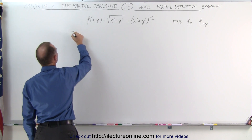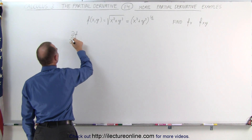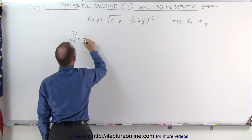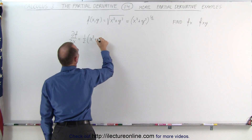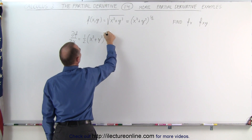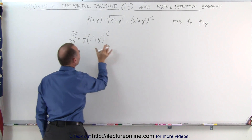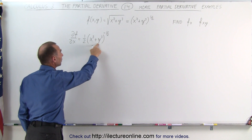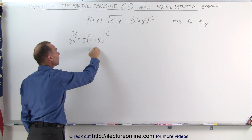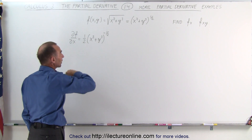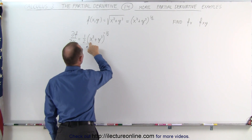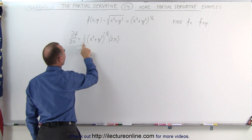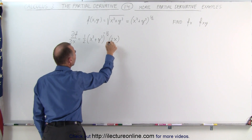First we're going to take the partial derivative of the function with respect to x. That's going to be equal to one-half times the quantity x squared plus y cubed to the minus one-half power, times the derivative of what's inside. Since it's the partial derivative with respect to x, y is considered a constant — so the derivative of y cubed is zero, and the derivative of x squared becomes 2x.